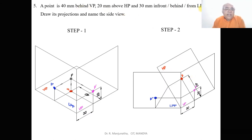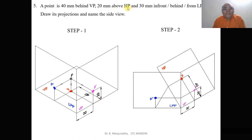When you look from the front view, the distance above HP is projected onto the vertical plane. So above HP is seen in VP. The distance given with respect to HP is taken in the vertical plane. The distance behind LPP is also seen in the front view — that is in the vertical plane — and that is 30 mm. When you look from the top view, the distance behind VP is projected onto the horizontal plane, so that distance of 40 mm falls on HP.